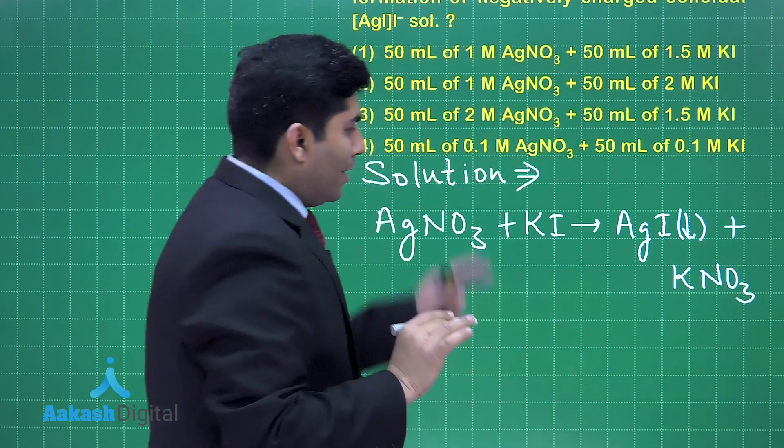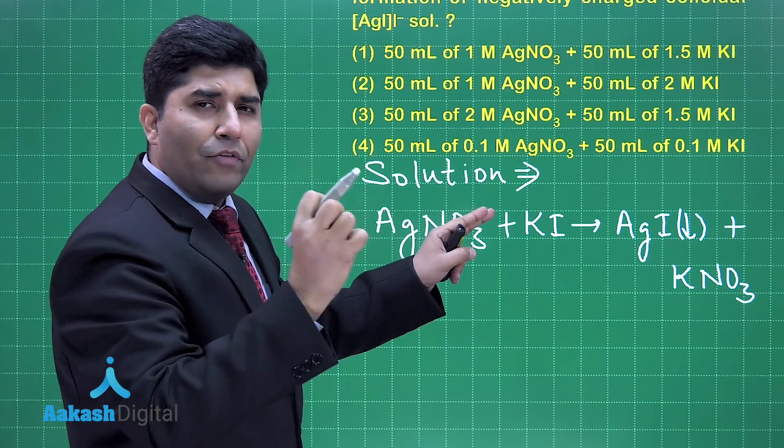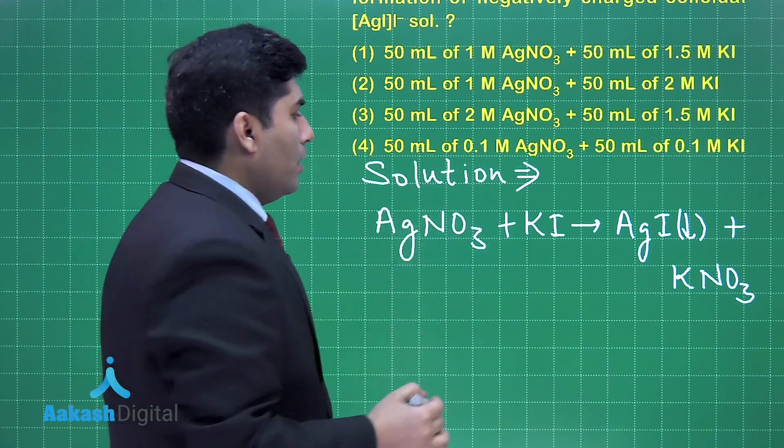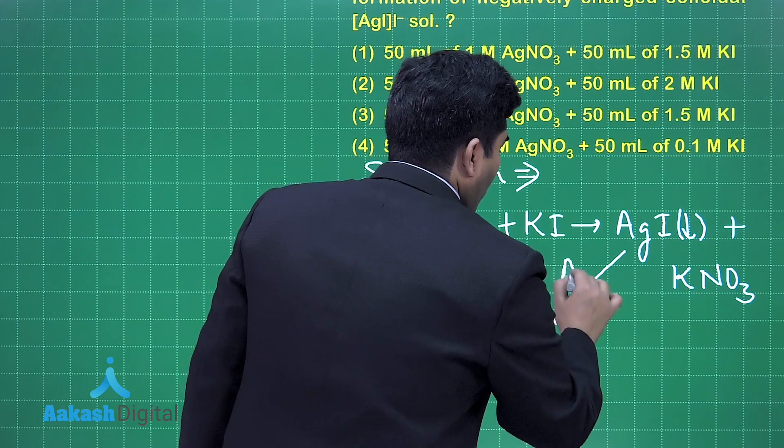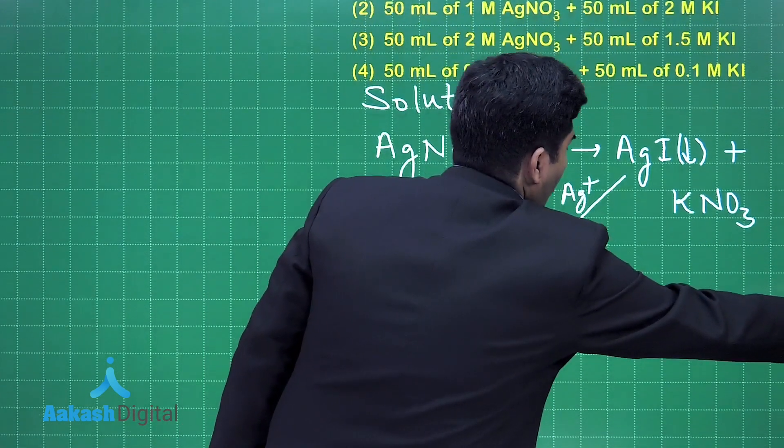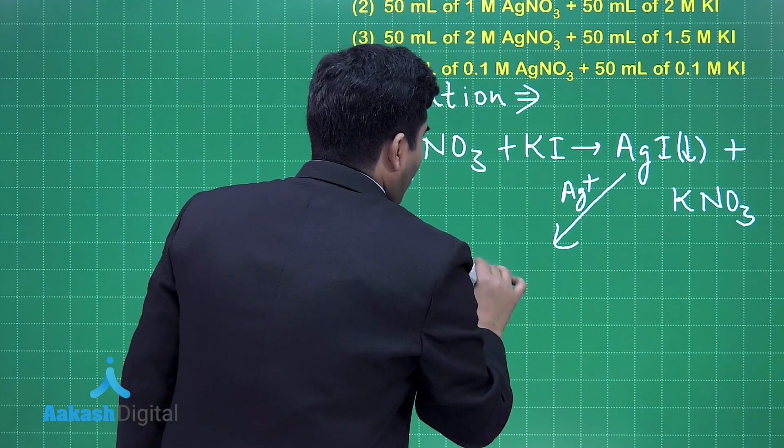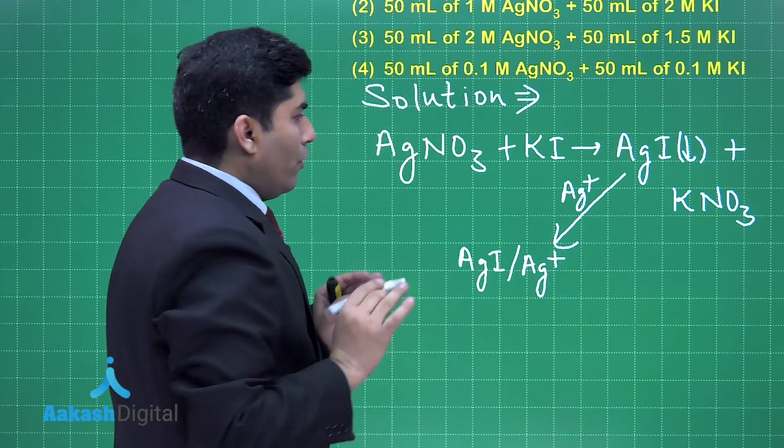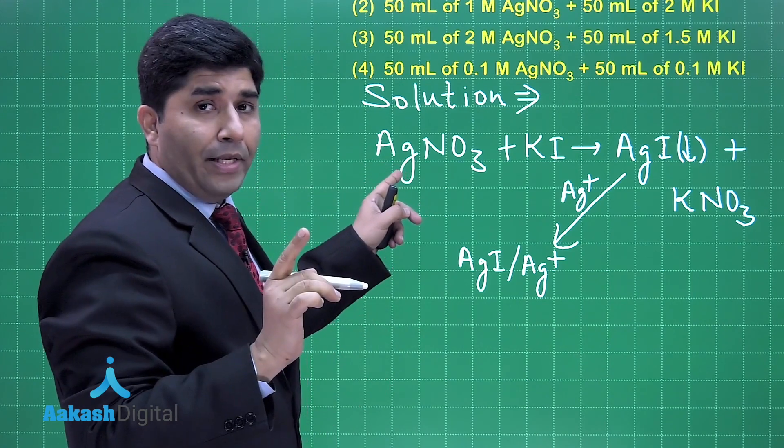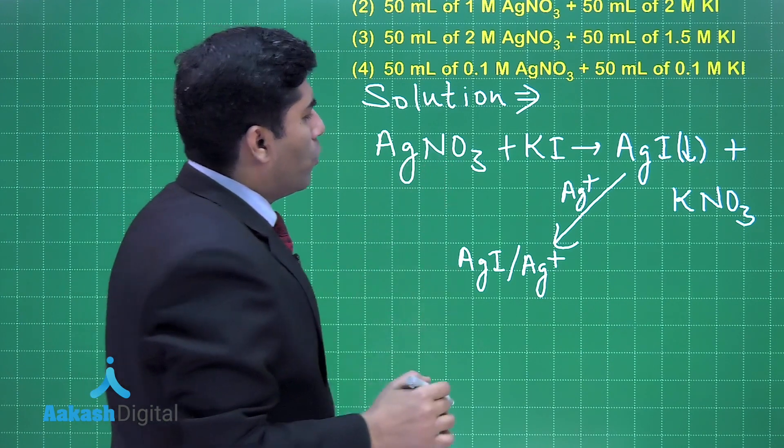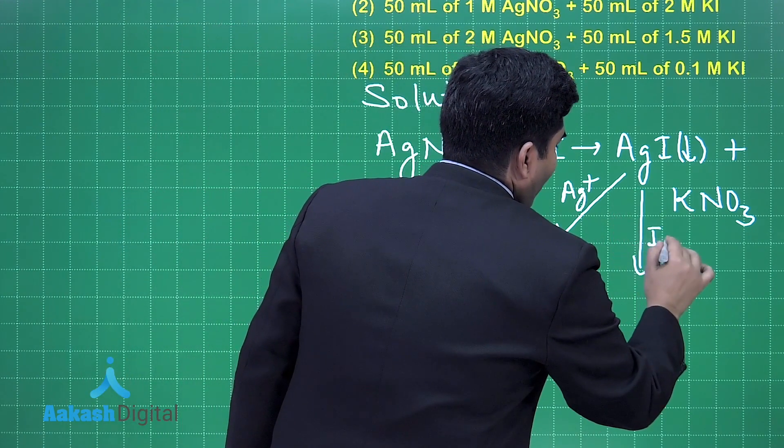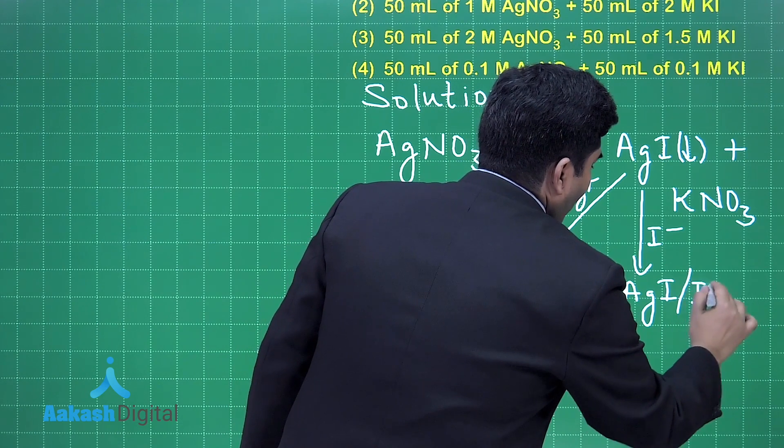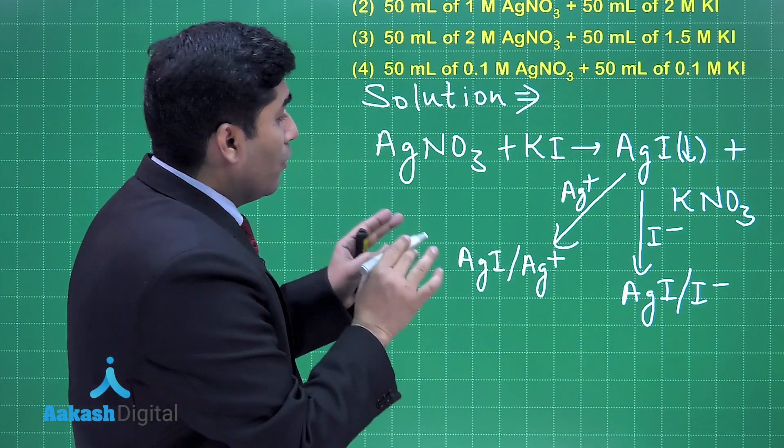Now what will happen, this AgI can adsorb one of the ions which is common to this compound, either it is Ag⁺ or I⁻. If it adsorbs Ag⁺ then it will form AgI/Ag⁺ when AgNO₃ is more in quantity. If KI is more in quantity then it will adsorb I⁻ and it will form AgI/I⁻, and that's what we want.